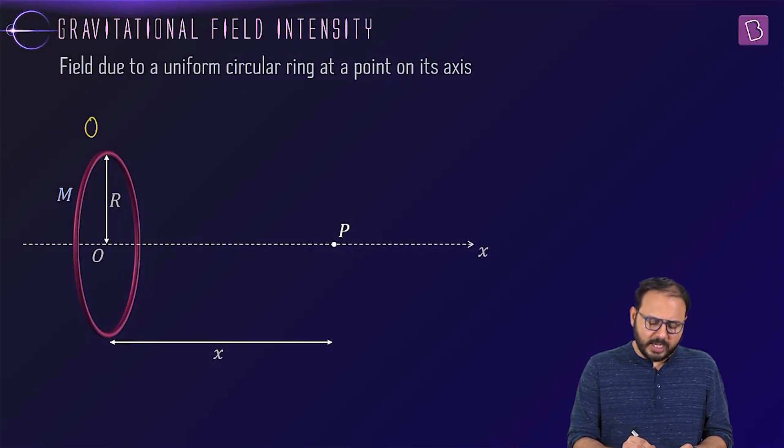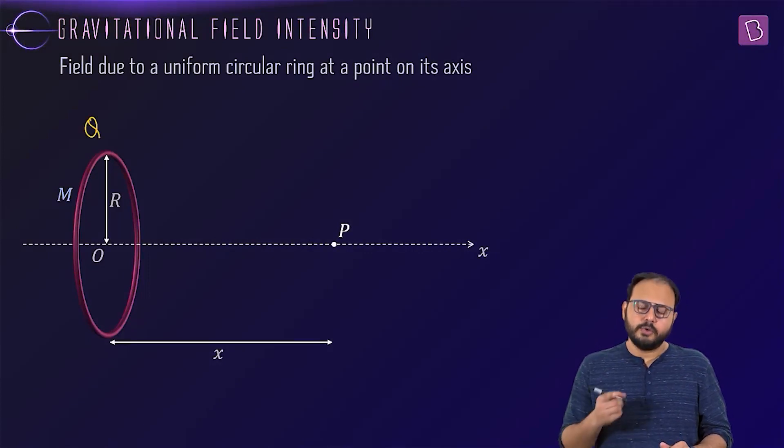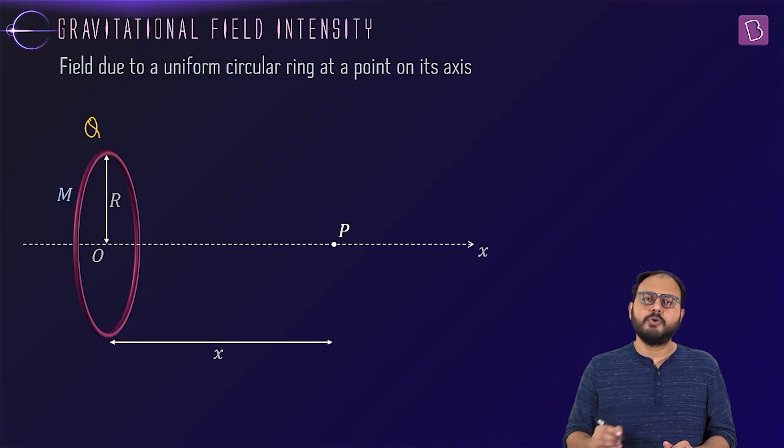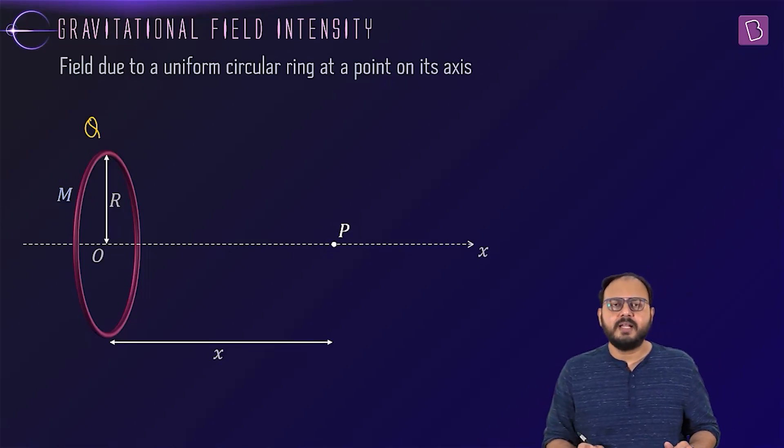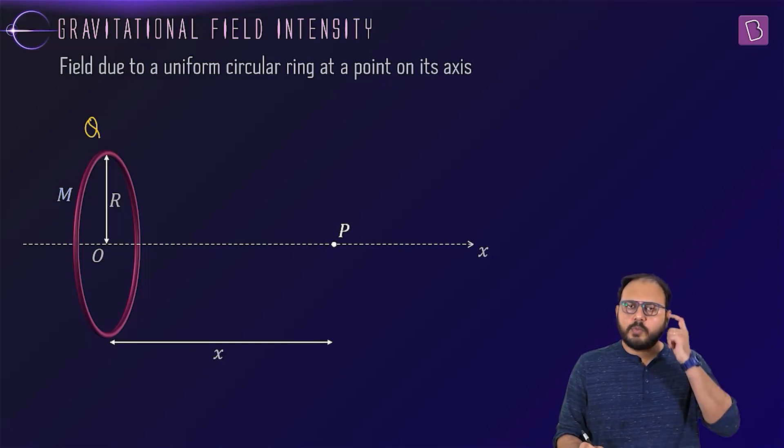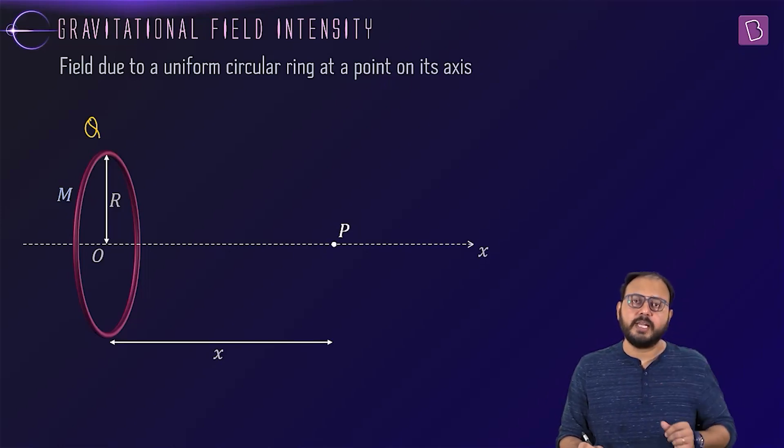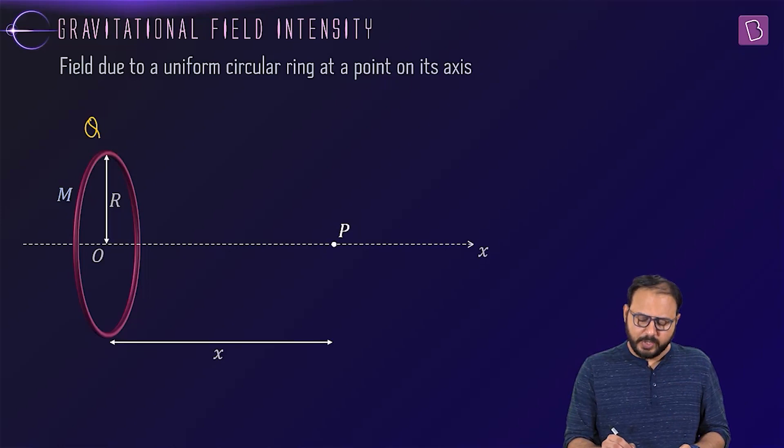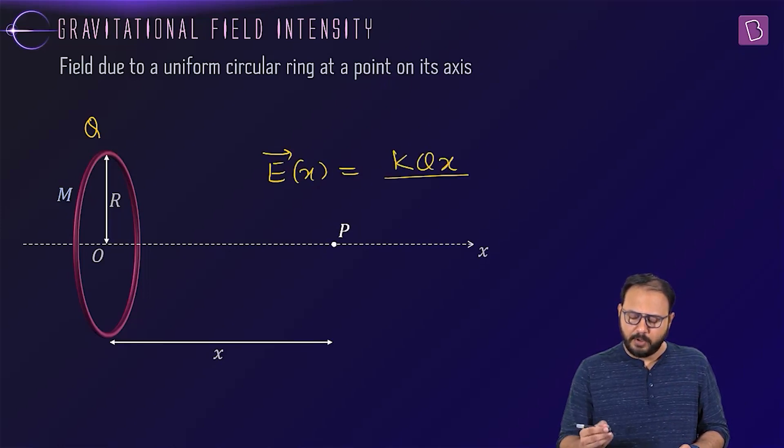If this was charge Q, do you remember the result due to a charge? Come on, quick. Quickly write down the result. What was the field at an axial point of a ring? Electric field. Quick, quick, quick. Electric field was KQX upon R square plus X square 3 by 2 X cap.